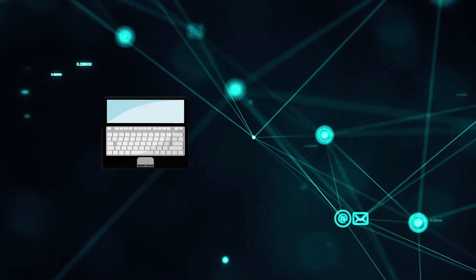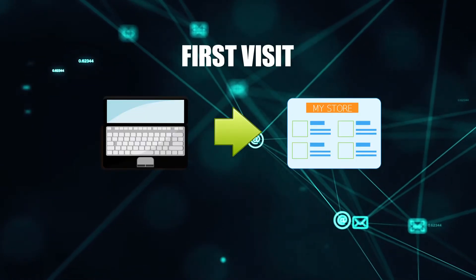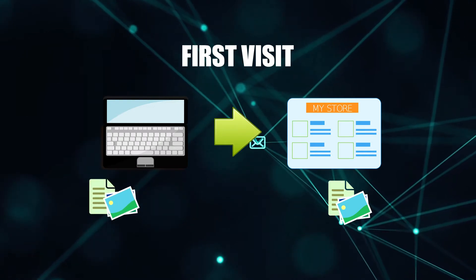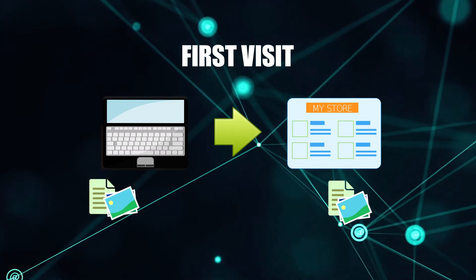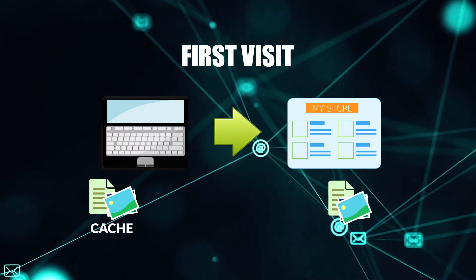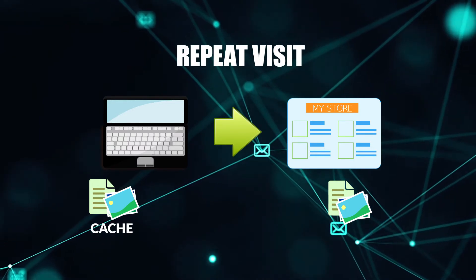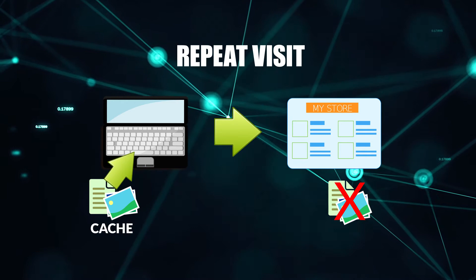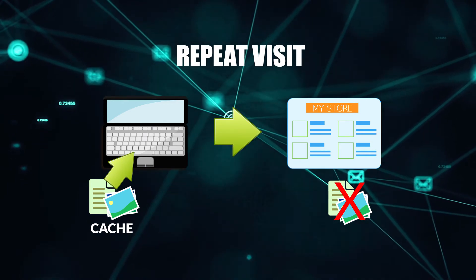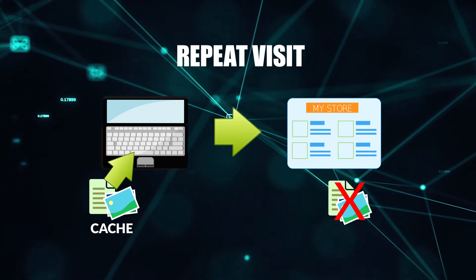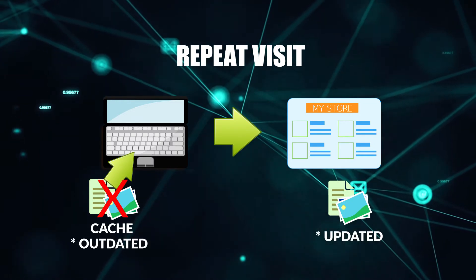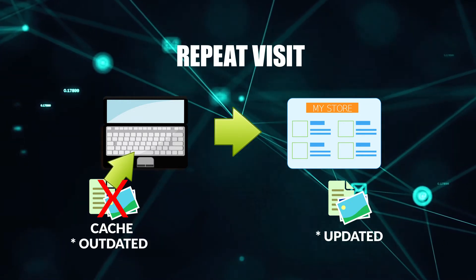When the user first visits a website, the browser will download and save scripts and images into the local device. This is called the cache. On repeated visits, the browser will simply load the files from the cache, effectively reducing the loading time. But this becomes an issue when the browser does not pick up updated files from the server.